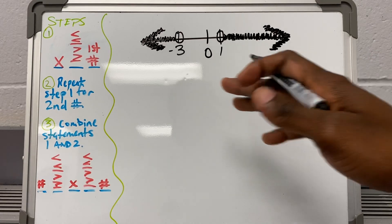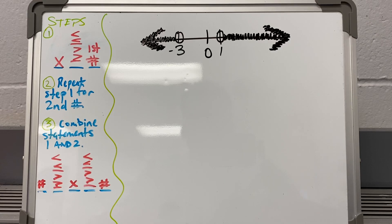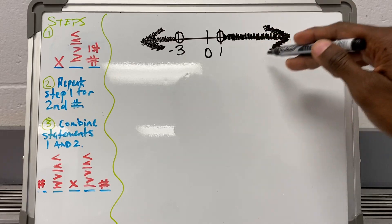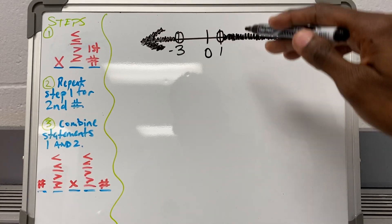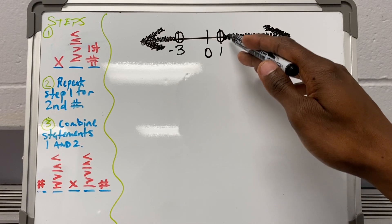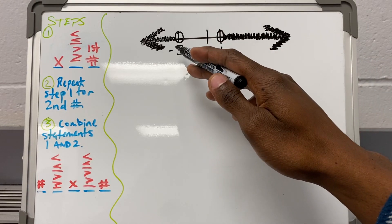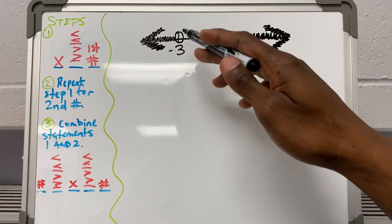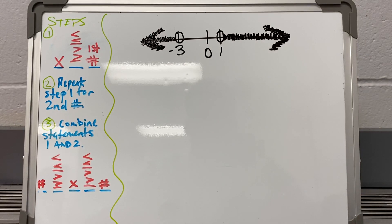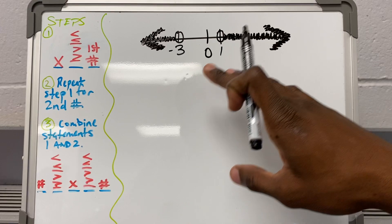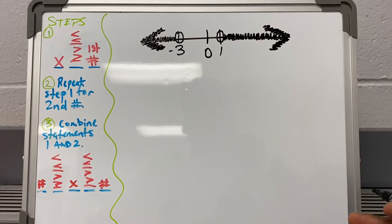What you see here is a graph — some of y'all may know it as a number line. You have two situations: there's number one with an open circle and shading to the right of it, and then there's a negative three with an open circle and shading to the left of it. I'm going to show you how to take these two inequalities and turn them into one, which is a compound inequality.